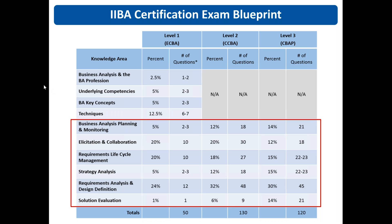A participant asked: the total number of questions doesn't add up — 120 to 149 for CBAP. Because IIBA only gives percentages, we're only estimating the number of questions, so they won't be perfectly exact — they could move up a little bit.